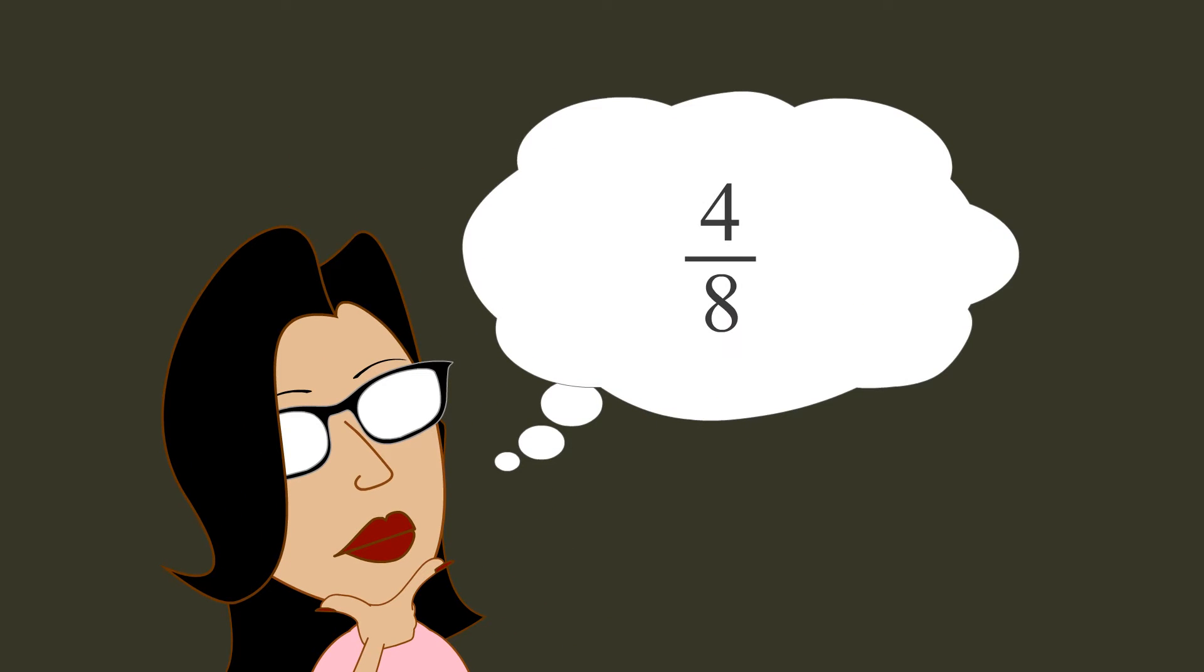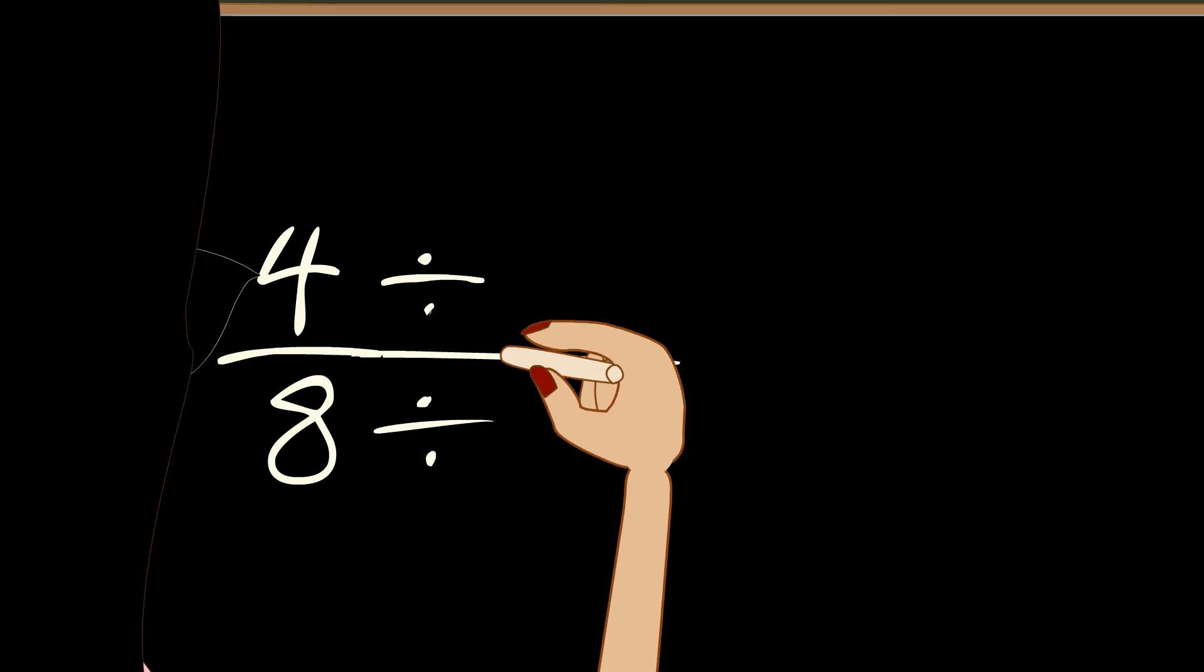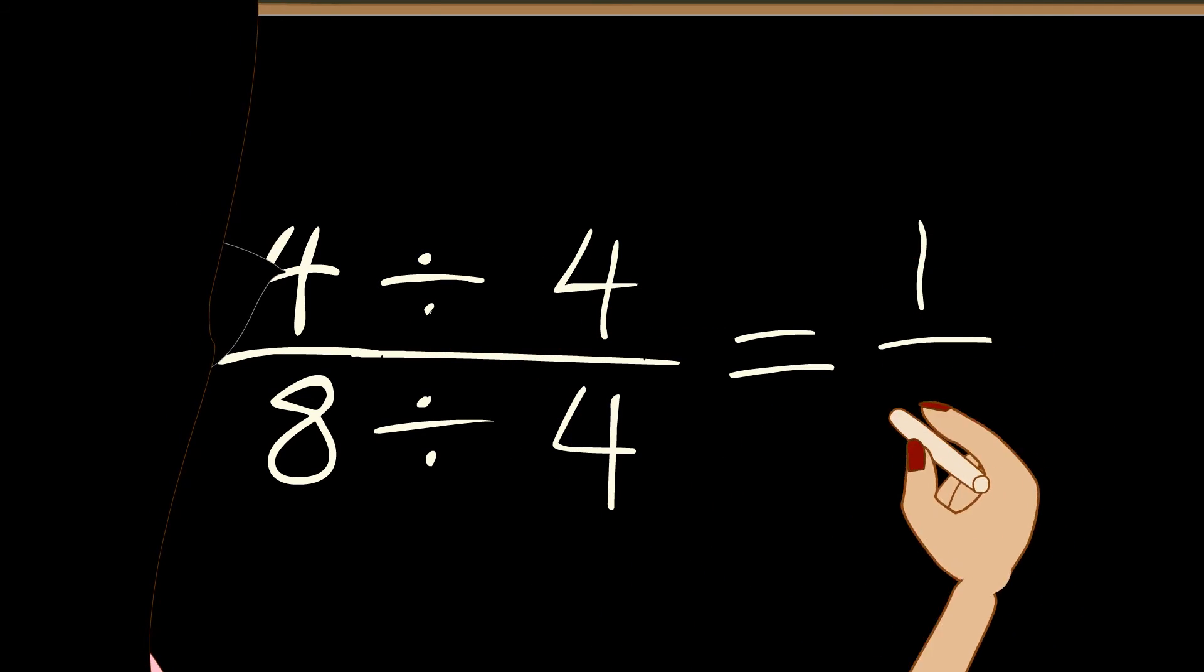If we look at the fraction four-eighths, it is easy to recognize that the numerator and denominator are both divisible by four. And so, this fraction can be written as one-half.